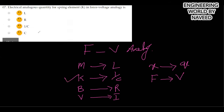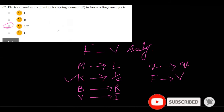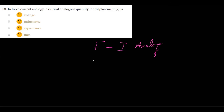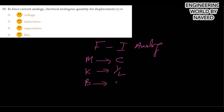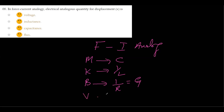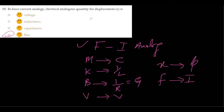The next MCQ is: the electrical analogous quantity for spring element in force-voltage analog — that is 1/C, so option c is correct. In the force-current analog: mass is analogous to capacitance; spring constant k is analogous to 1/L (reciprocal of inductance); dashpot B is analogous to 1/R, also known as conductance G; velocity is analogous to voltage; displacement x is analogous to flux; and force is analogous to current. So for displacement x in force-current analog, the answer is flux — option d.